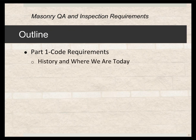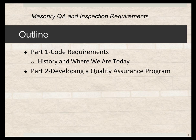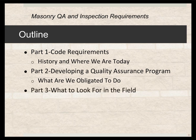As I mentioned, it's broken down into three parts. The first part covers the code requirements and the history — how we got to where we are today. The second part is to develop a quality assurance program: what we, as designers, are obligated to do so that we can develop a clear message to the field so that they can effectively carry out the quality control aspect of the quality assurance program.